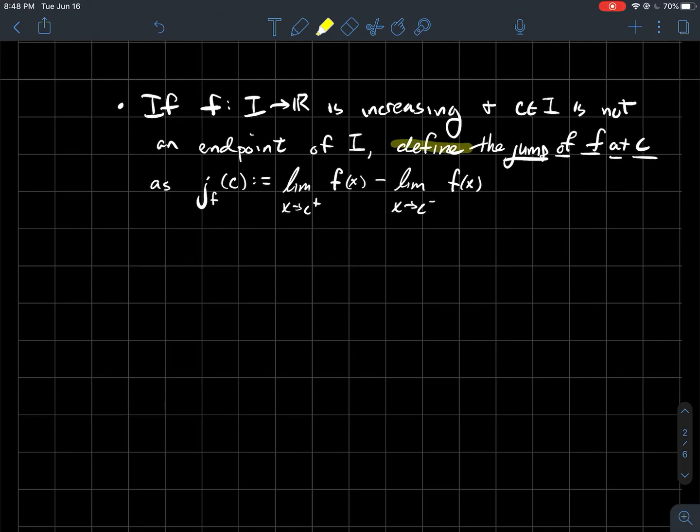So the new concept is we're going to define what's called the jump of f at c as the following. It's got function notation where J stands for jump. This little subscript f means I'm talking about this function f. And I'm telling you about what input of f am I considering at c. And so what the jump of f at c is, it's just going to be the difference of the right hand limit minus the left hand limit of my function.